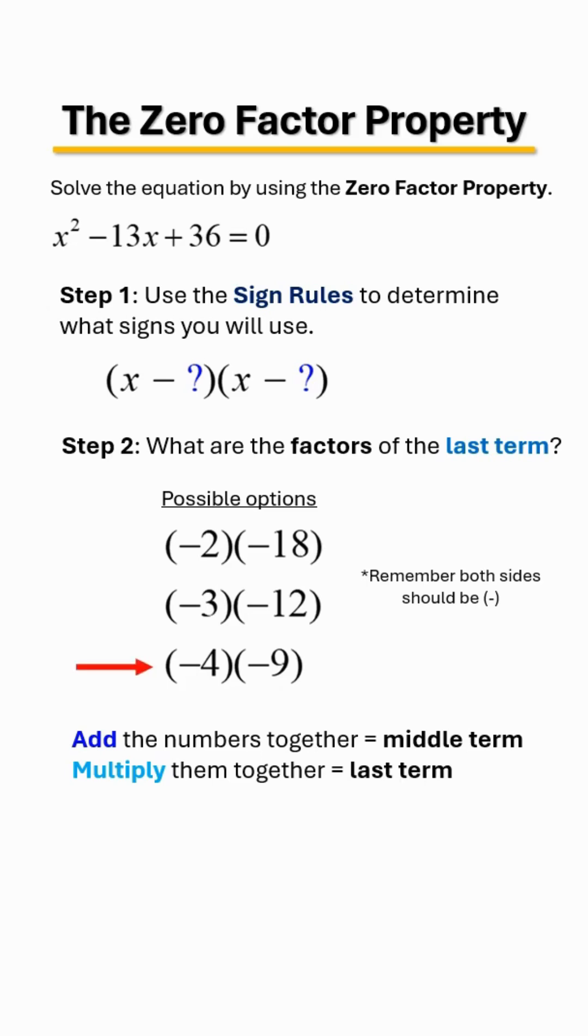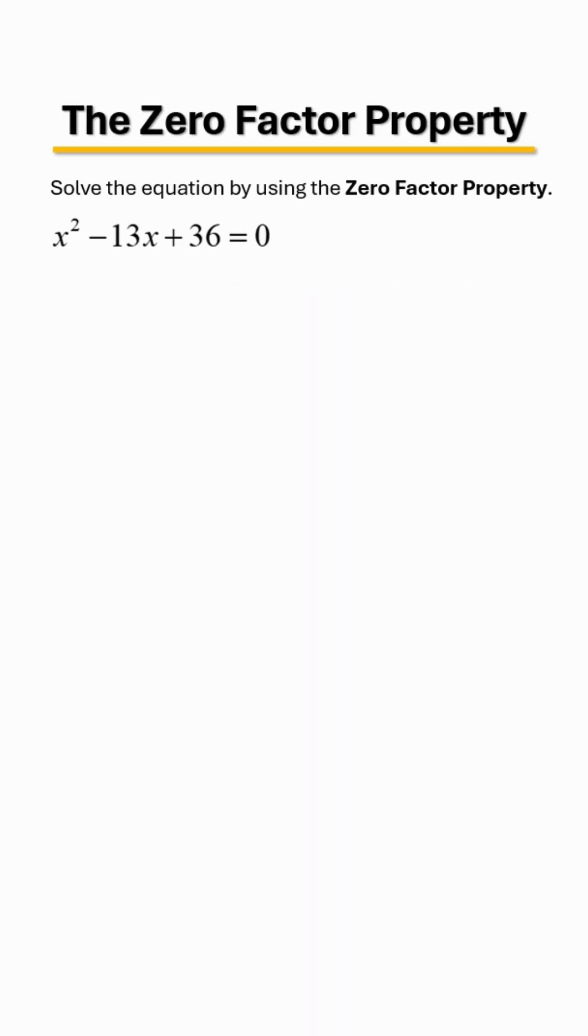Next step is to set each factor equal to zero and solve for x. So as we can see, we would add four and add nine, and x equals four and nine.